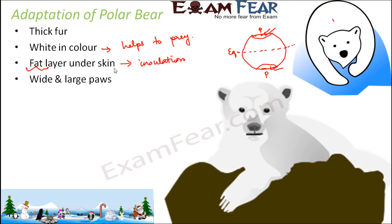Polar bears have wide and large paws, which help them walk on snow. Walking on snow is not easy — if you've ever visited a hill station in winter and tried walking on snow, you'd know it's tiring. Because polar bears always live in snow-covered regions, their wide paws give them a better grip and help them walk over snow.